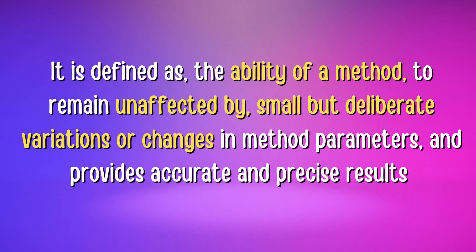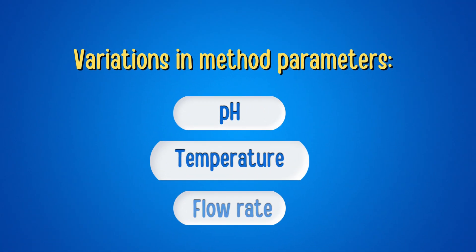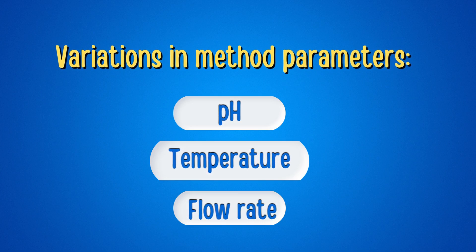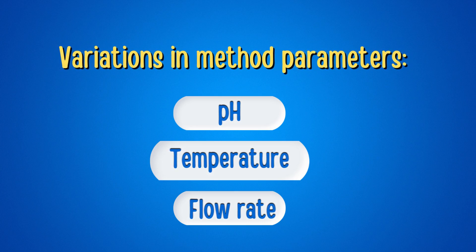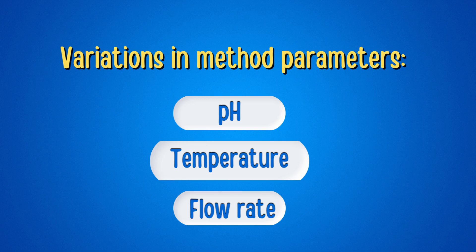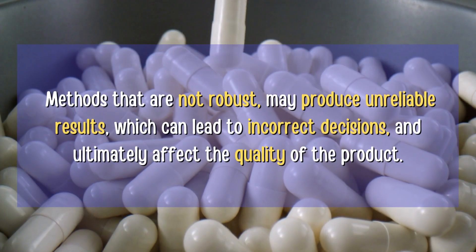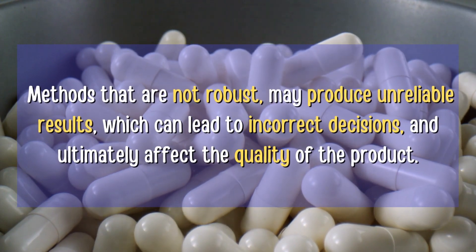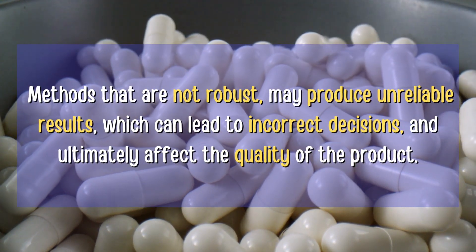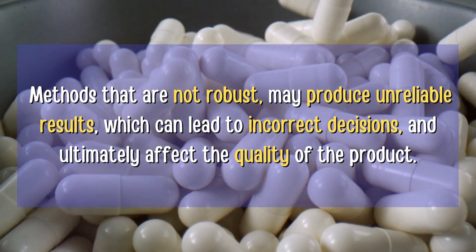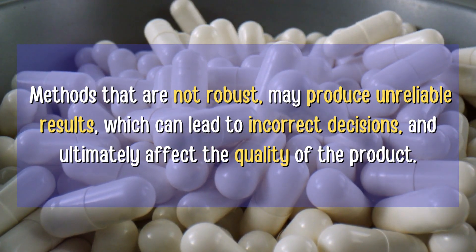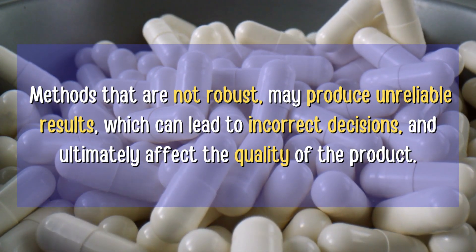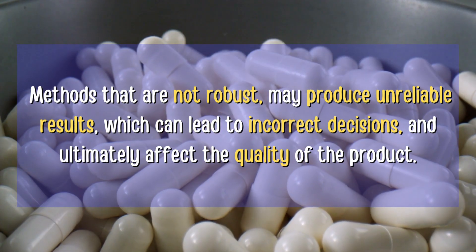To assess robustness, a study can be conducted to determine the effect of small but deliberate variations in method parameters such as pH, temperature, or flow rate on the accuracy and precision of results. These parameters are varied within a certain range while monitoring their effect, to determine critical method parameters and the limits within which they can be varied without compromising results. A robust method helps ensure consistency of results across different batches or laboratories, and methods lacking robustness may produce unreliable results affecting product quality decisions.